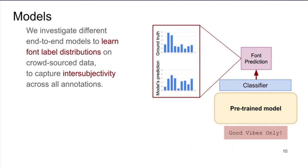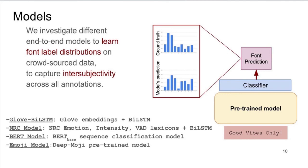We explored transfer learning from pre-trained models in this task. We investigated four different deep learning based architectures to learn font distributions of examples in our datasets. In particular, we compared the effectiveness of emotional embeddings in models like NRC and emoji models to contextual embeddings like the BERT model. The emoji model is based on deep emoji implementation. It's essentially a pre-trained model on the task of emoji prediction. Here we don't predict emojis. We only use the hidden representation of this model to predict font distributions.